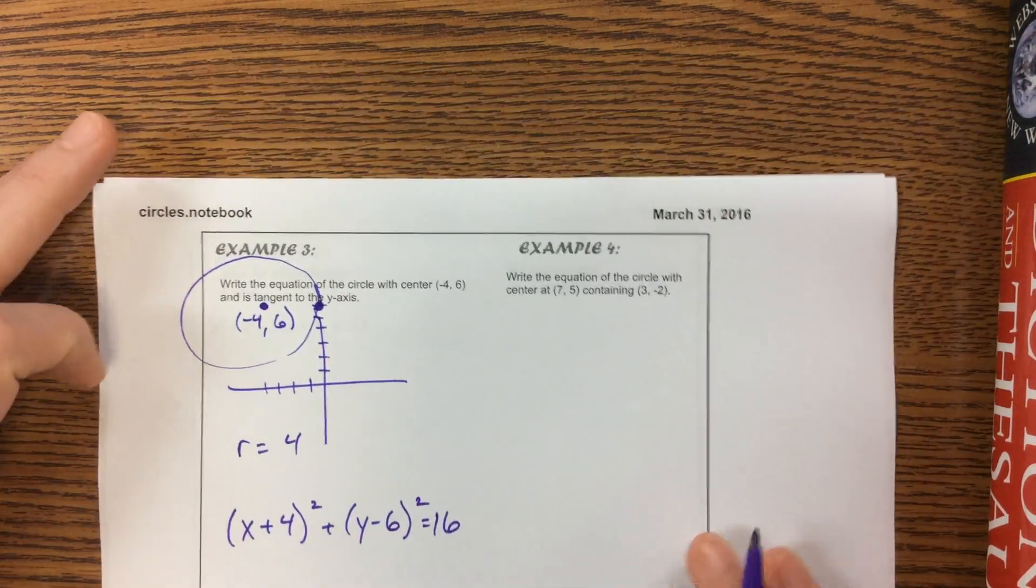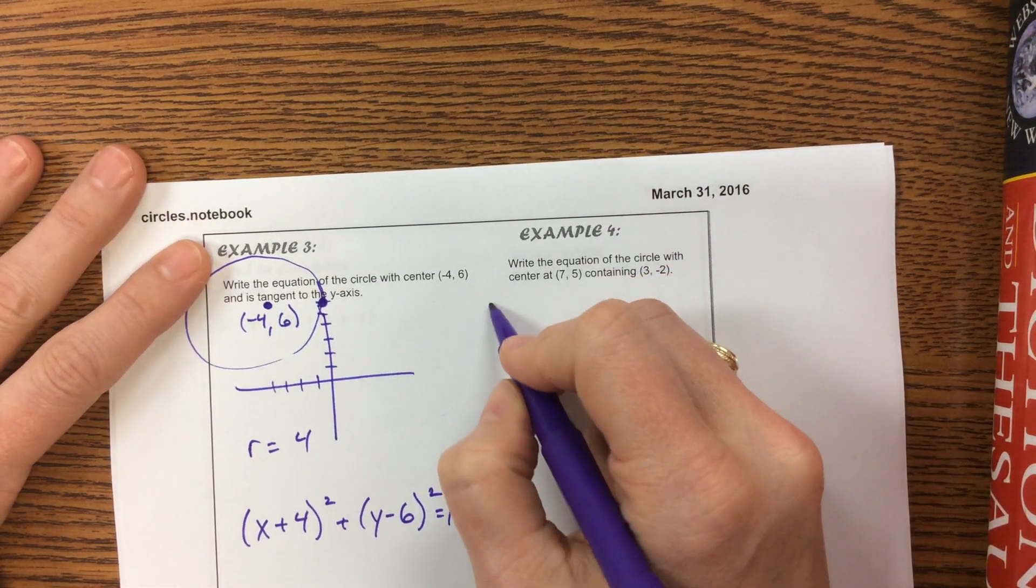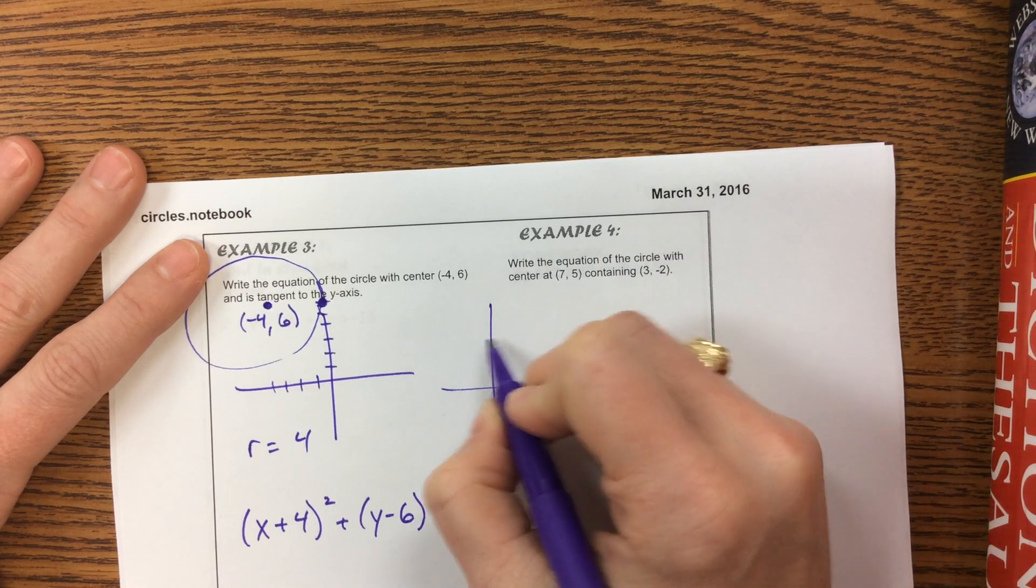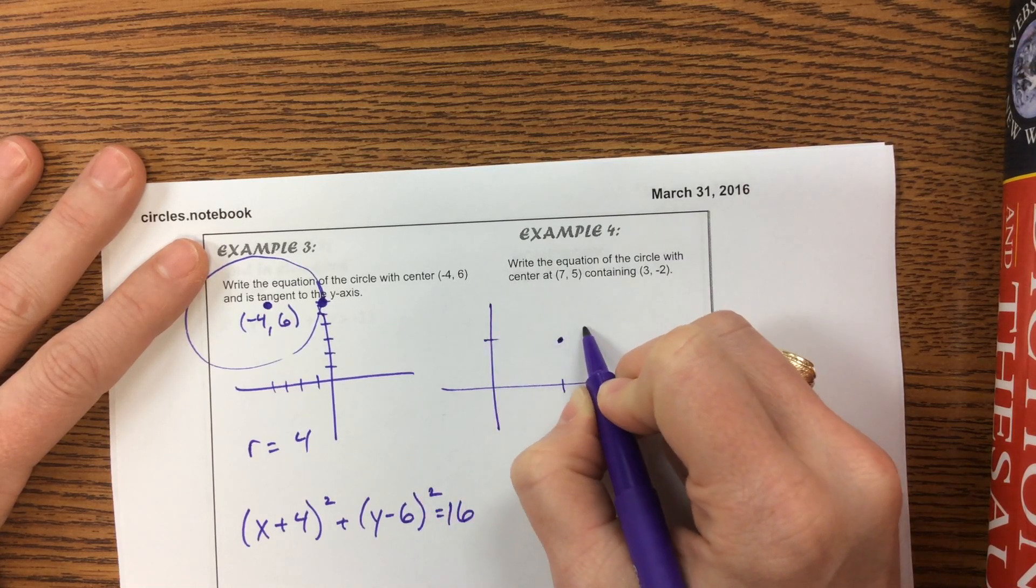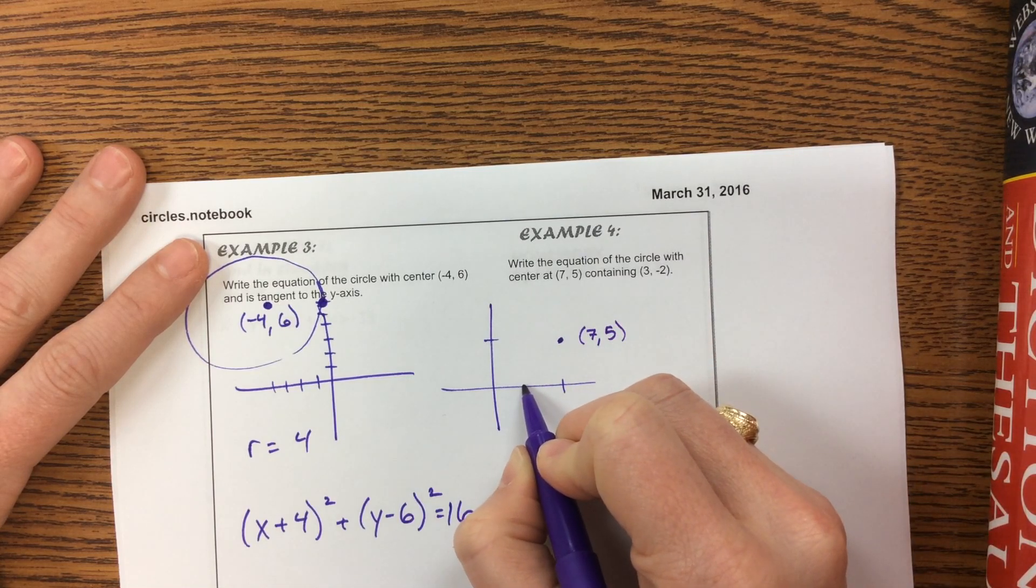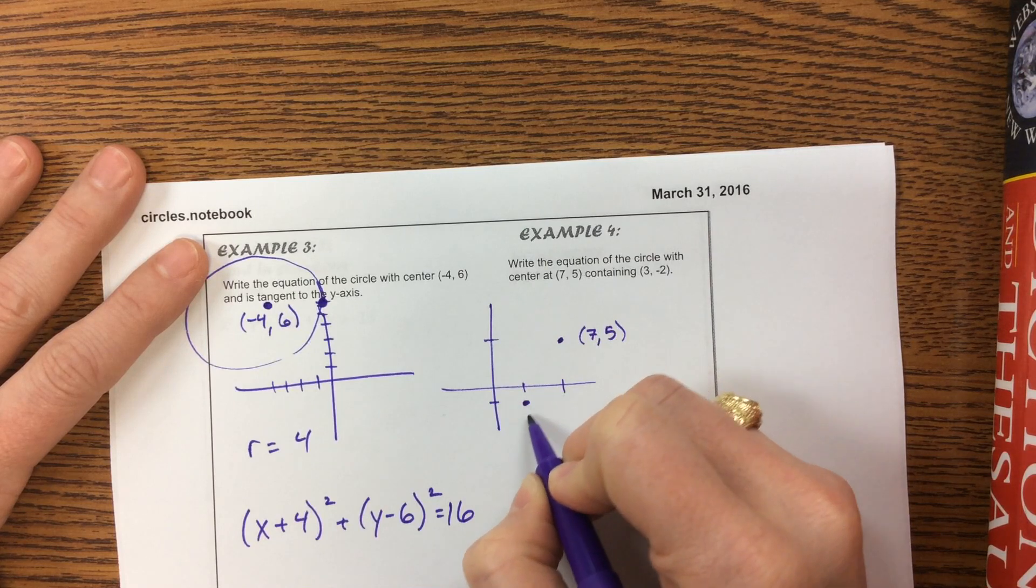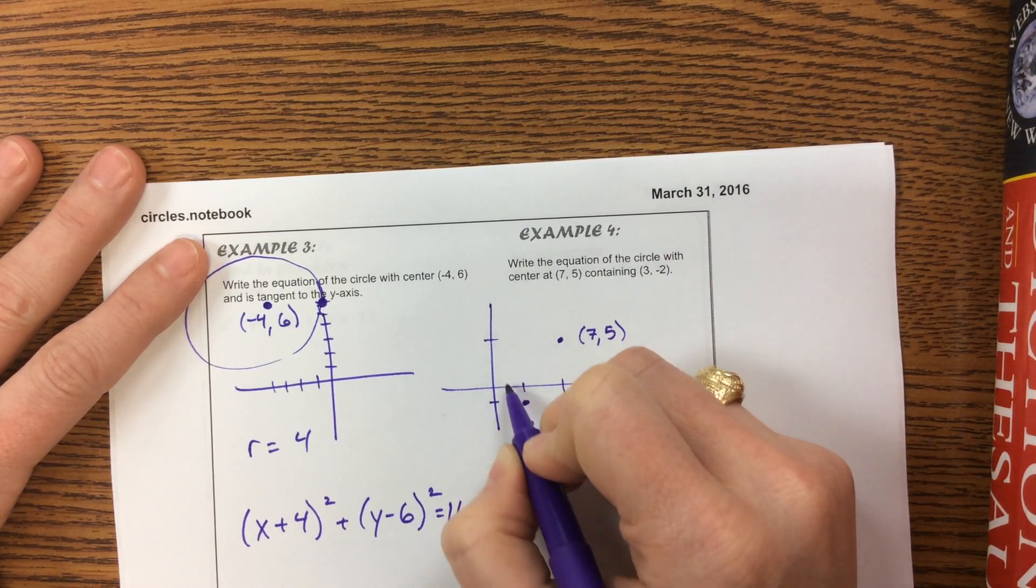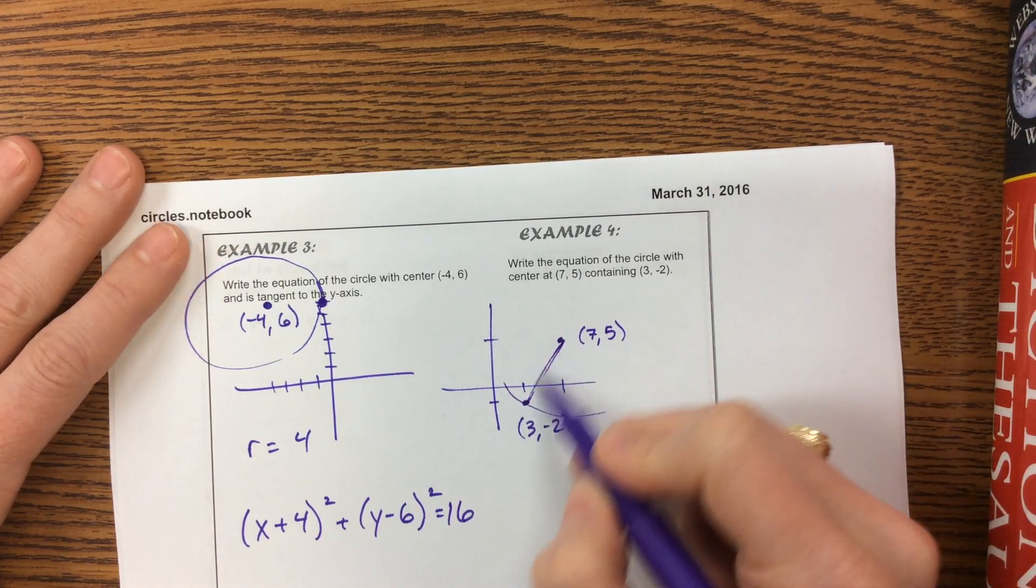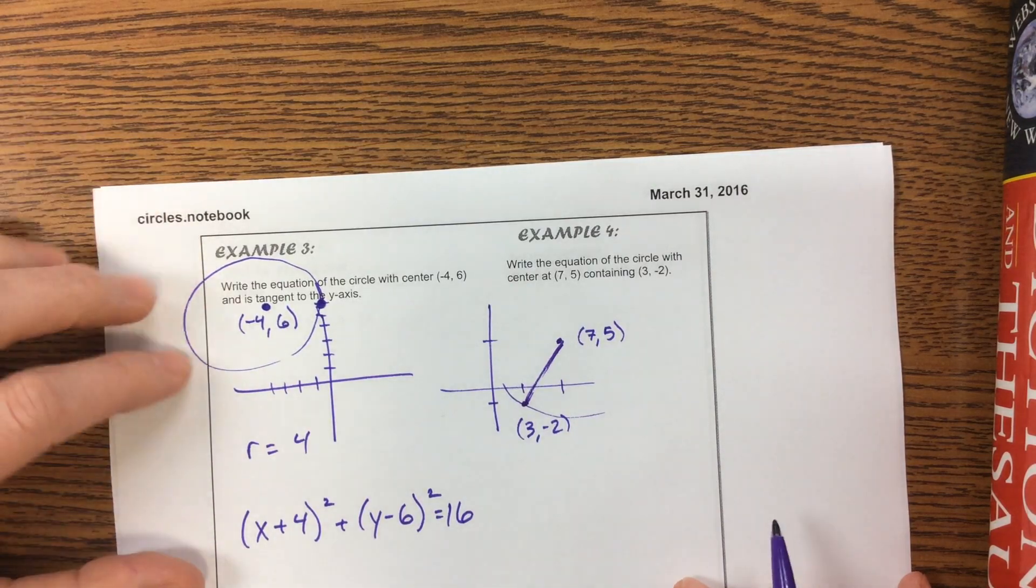Next: write the equation of a circle with center 7, 5 containing the point 3, negative 2. The center is at 7, 5 and it contains 3, negative 2, so that point is on the circle. This length is the radius. There are two ways to think through this.